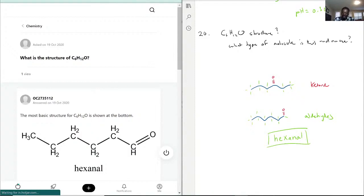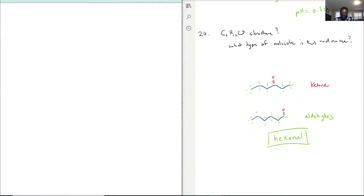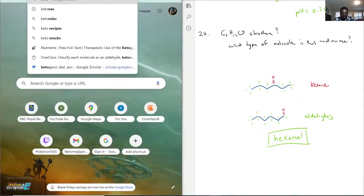you drop the E and add an -al there. So you have hexanal. That will be the aldehyde name for that. Now for ketones, honestly I do not remember how to name them, so I will actually have to look up ketone naming.